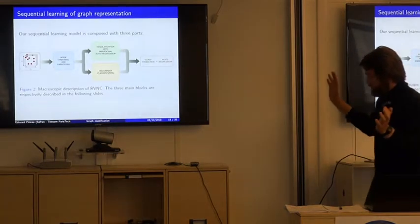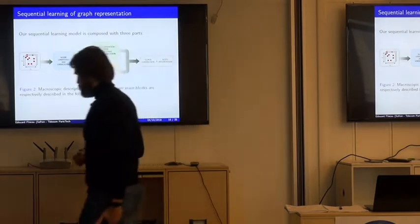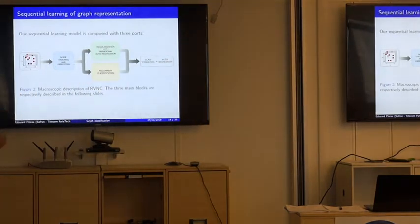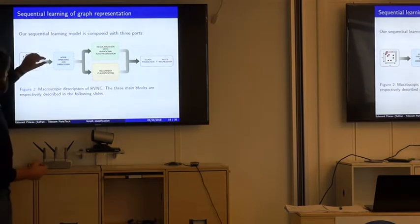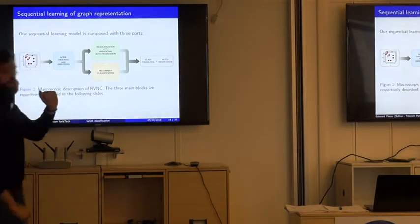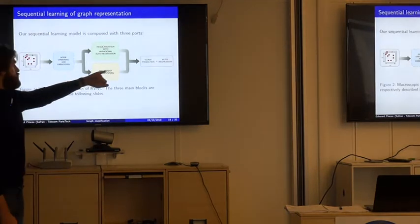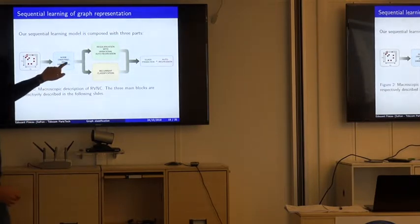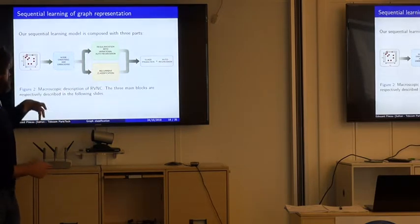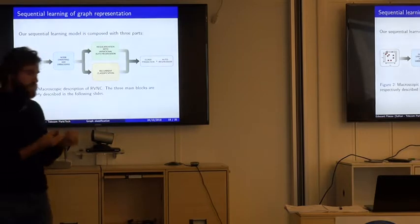The macro presentation of the model: first, graphs are represented by their adjacency matrix. Then an ordering and embedding of the nodes is performed. With this embedding, a recurrent classification is done by sequentially looking at the embedded nodes. In parallel with classification, we regularize the embedding to ensure smoothness — we want two nodes that are close in graph structure to also be close in the latent space.